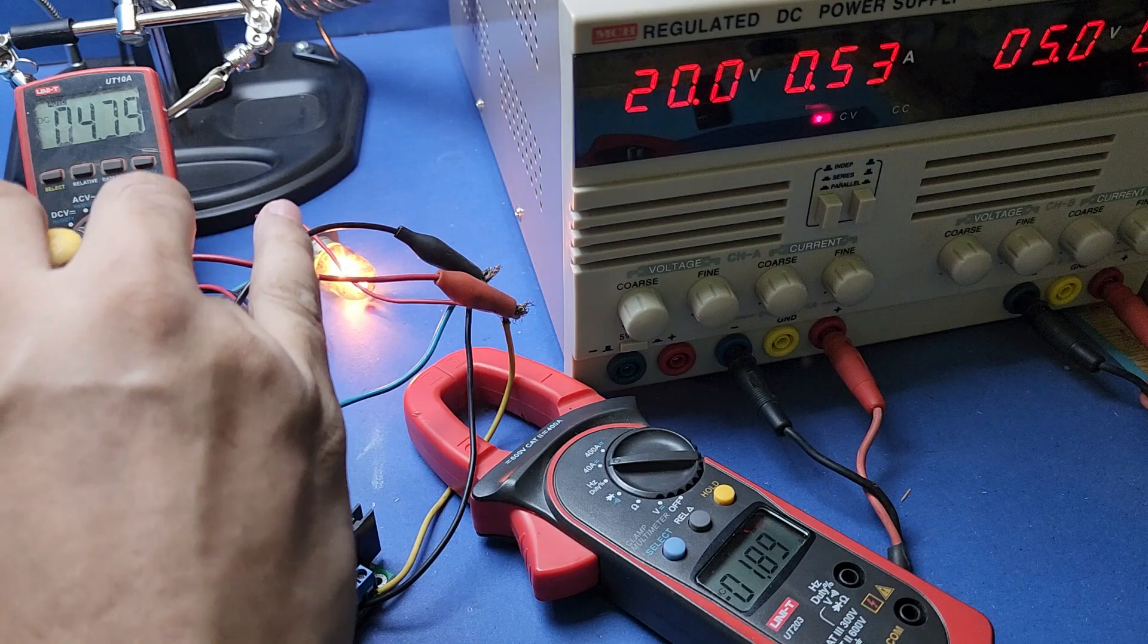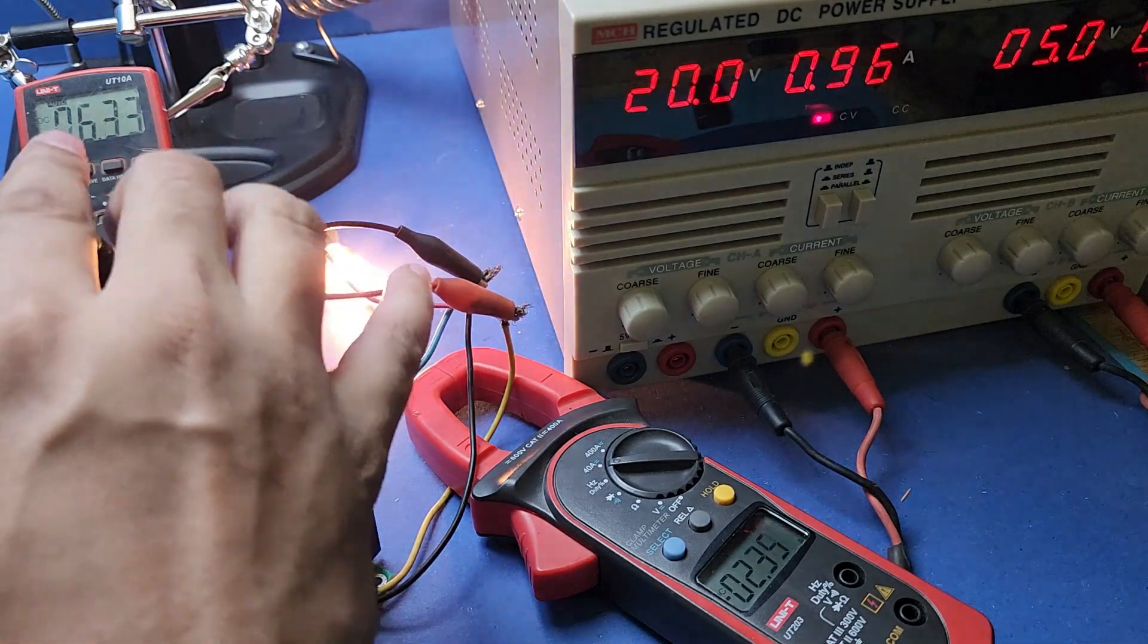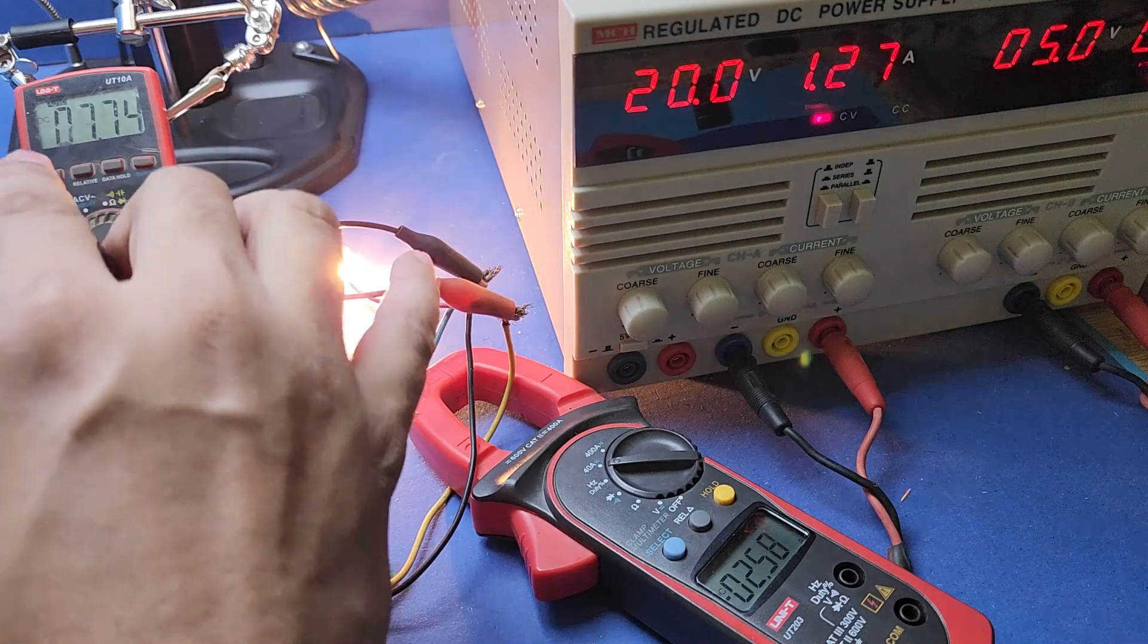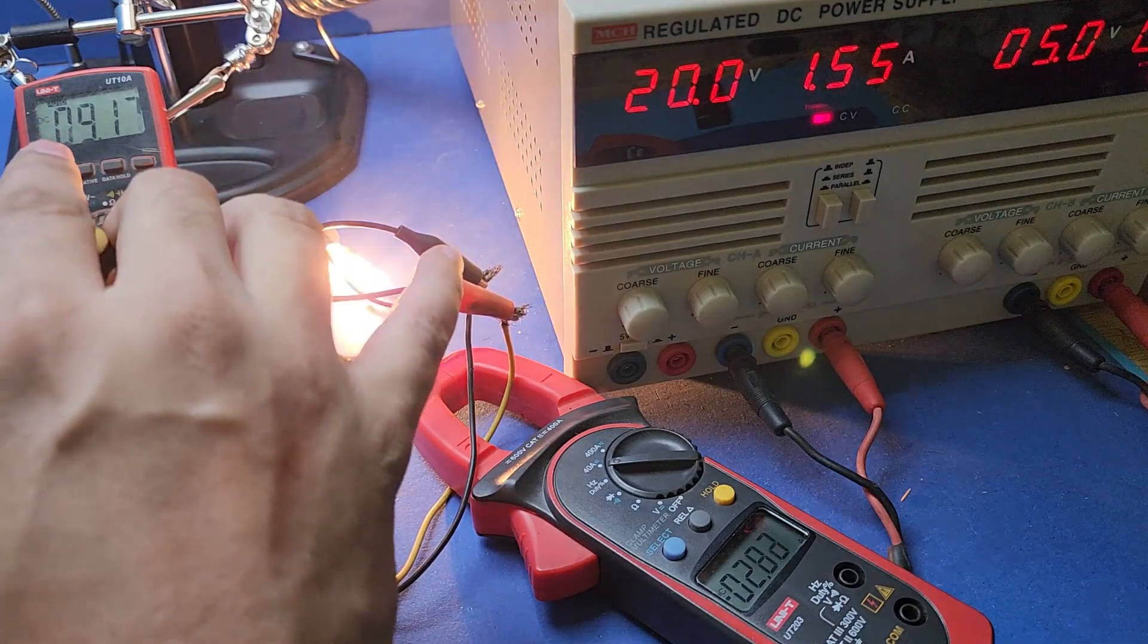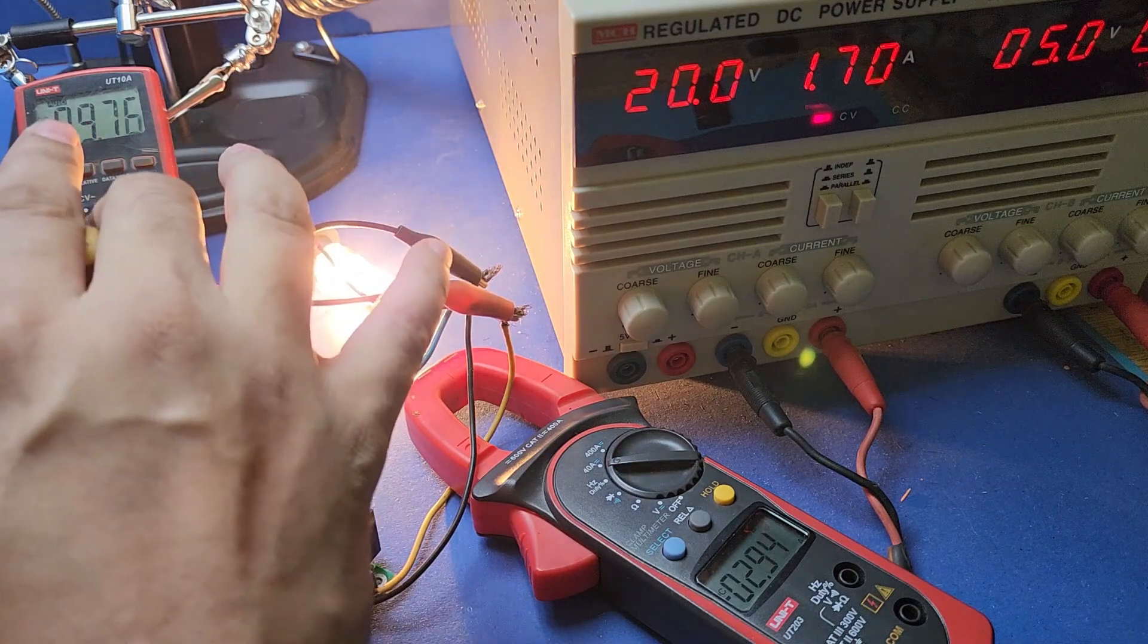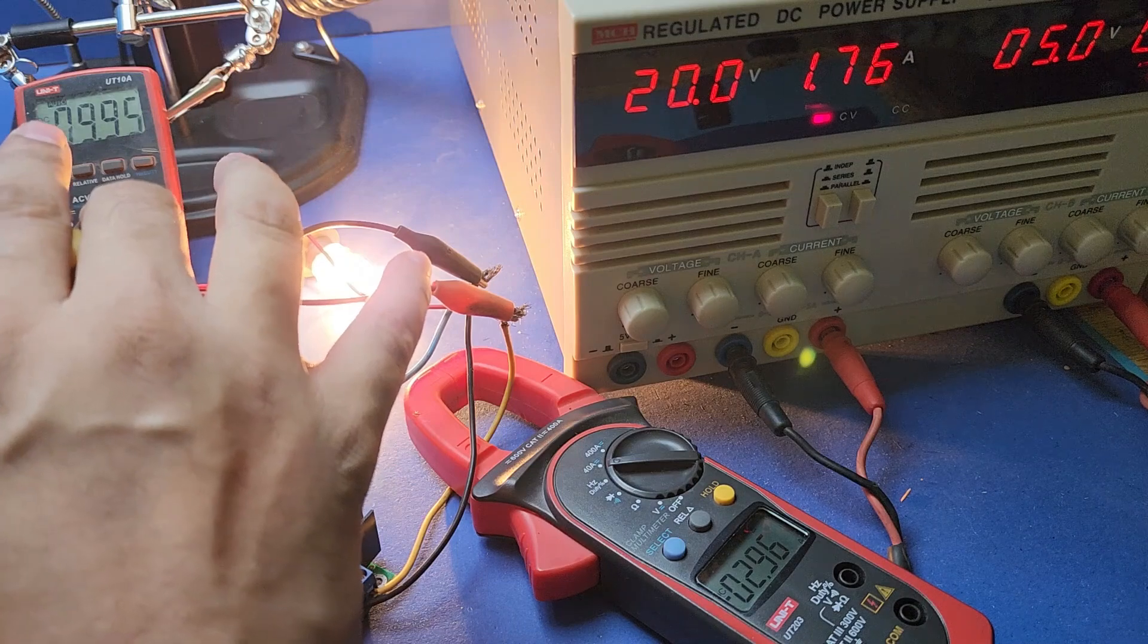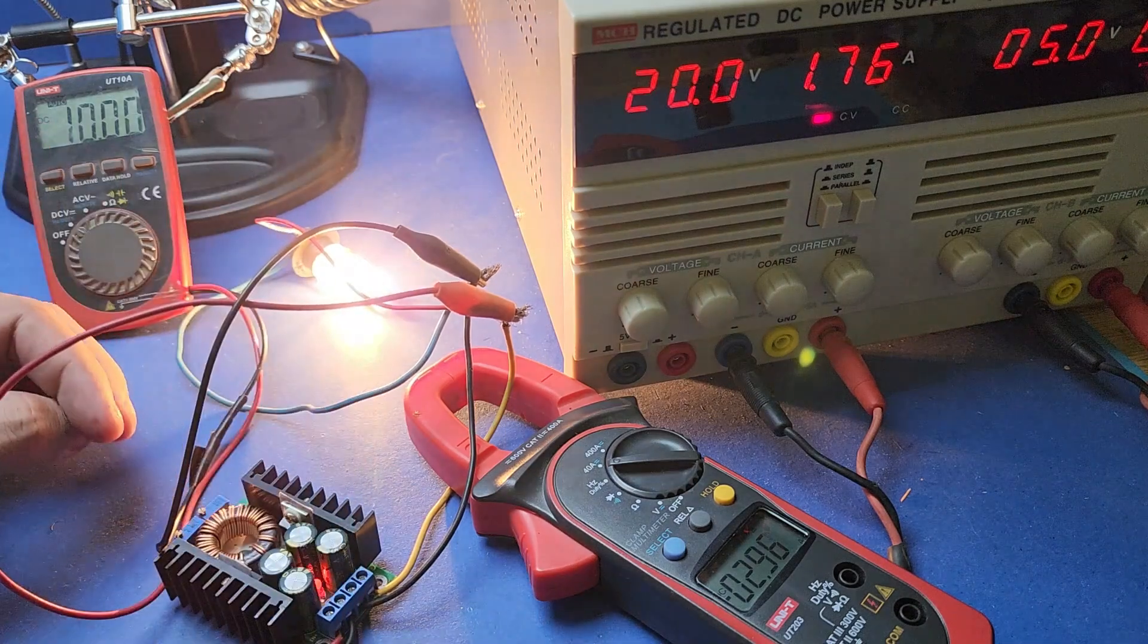I will now show you its efficiency by doing a practical check. Here I have set the input voltage of my XL4016 module to 20 volts and now I am setting the output volts to 10 volts and the output current to 3 amps.